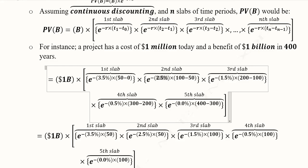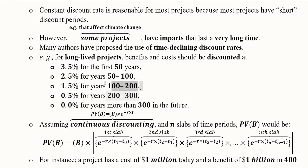For the next slab, the discount rate was 2.5% and this was the difference of the two time periods. And 1.5% for the third slab, then 0.5% for the fourth slab, and 0% for the fifth slab. And you can see the time difference is also there with every slab.